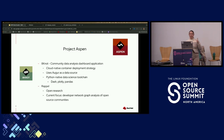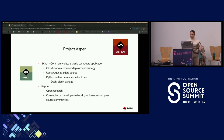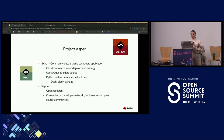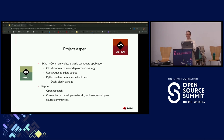So what is Project Aspen? There are two main parts to this project. The first one is 8-Knot, which is a community data analysis dashboard application. It uses a cloud-native container deployment strategy, uses Augur from the CHAOSS project as a data source, and it is a Python-native data science toolchain — mainly using Dash, Plotly, and Pandas.